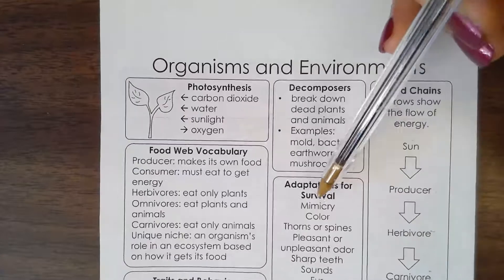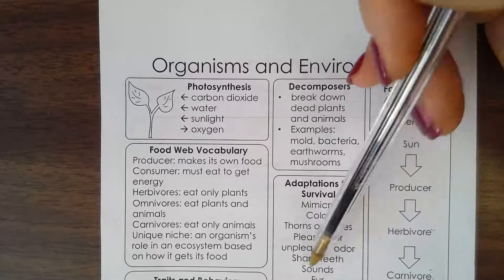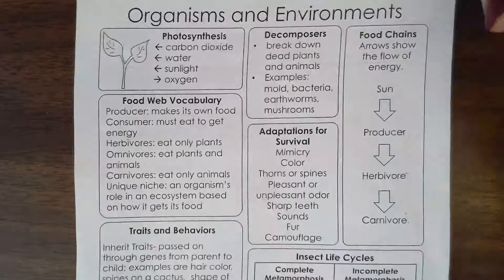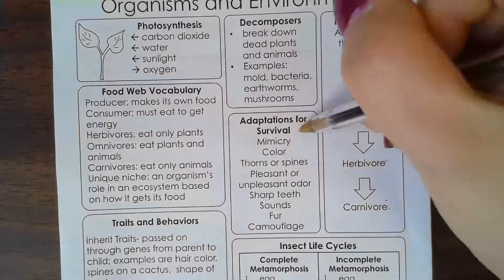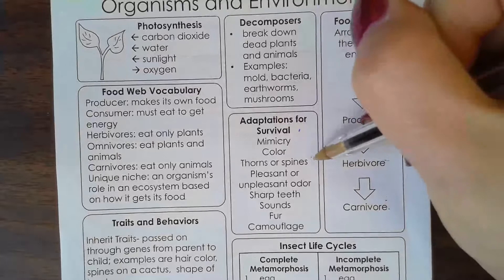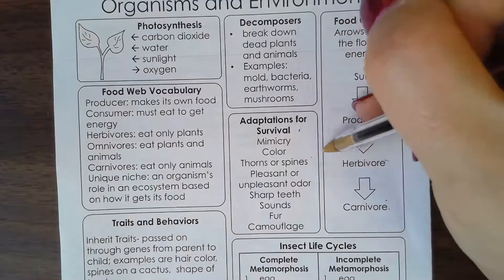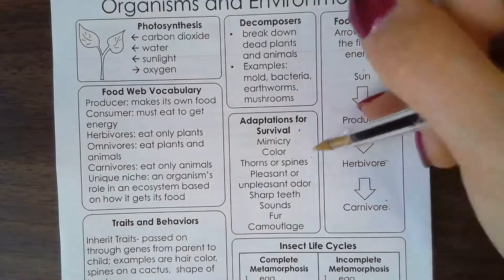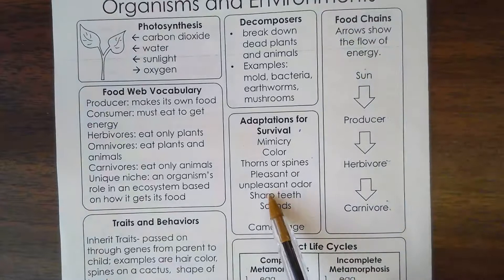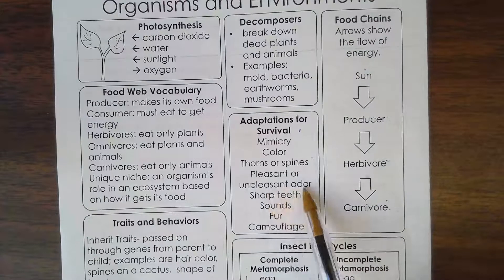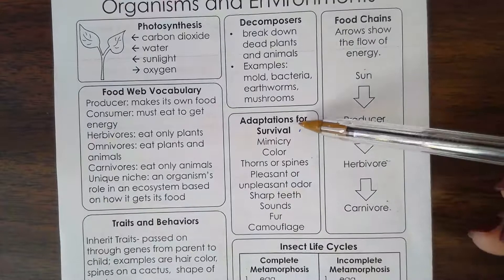Adaptations for survival: mimicry, color, thorns or spines, pleasant or unpleasant odor, sharp teeth, sounds, fur, and camouflage. This is how animals adapt so they can survive. If I'm a porcupine and I'm scared, I'm going to spike up my spines and try to attack with them. For unpleasant odor — the skunk gives off the worst scent — if it's scared, it's going to spray. These are things animals do to protect themselves.